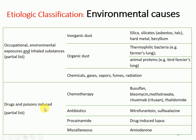Under drugs and poison-induced causes: drugs used to cure disease can sometimes be toxic to the lungs, as can poisons. Starting with chemotherapy — chemotherapeutic drugs used to reduce the severity of cancers — some of these drugs can cause damage to the interstitial lining of the lungs. For example: busulfan, bleomycin, methotrexate, rituximab, and thalidomide. These are drugs that are highly toxic to the lungs.